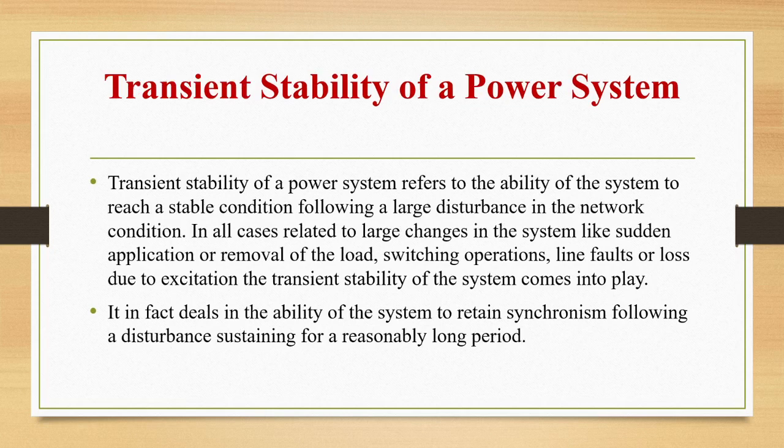Transient stability of a power system refers to the ability of the system to reach a stable condition following a large disturbance in the network. In all cases related to large changes in the system — such as sudden application or removal of load, switching operations, line faults, or loss of excitation — the transient stability of the system comes into play. It deals with the ability of the system to retain synchronism following a disturbance sustaining for a reasonably long period.